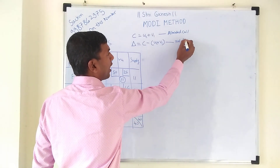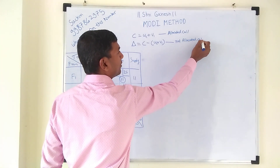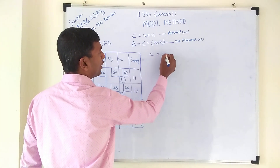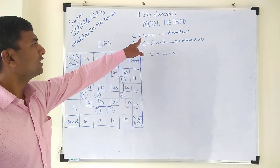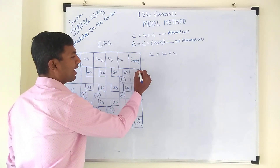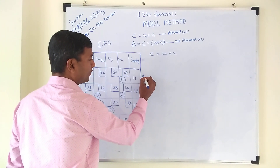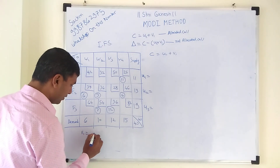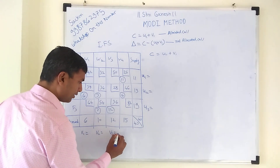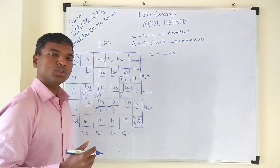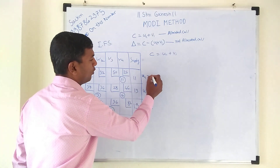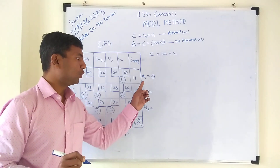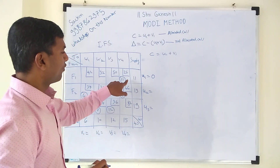The first formula C = ui + vi is used for allocated cells, and the delta formula is used for not-allocated cells. Now we start with the first formula. For rows we assign u1, u2, u3, and for columns we assign v1, v2, v3, v4. Whenever you start solving with the MODI method, you suppose ui = 0. Always remember: we must take u1 = 0.